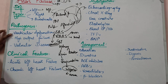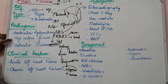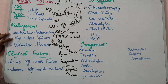Another type is high output failure. In conditions like thyrotoxicosis, cardiac output is very high. Because of the excessive demand on the heart and prolonged strong contractions, the cardiac muscle deteriorates, eventually leading to heart failure. Severe thyrotoxicosis and similar high-demand states are important causes of this type.